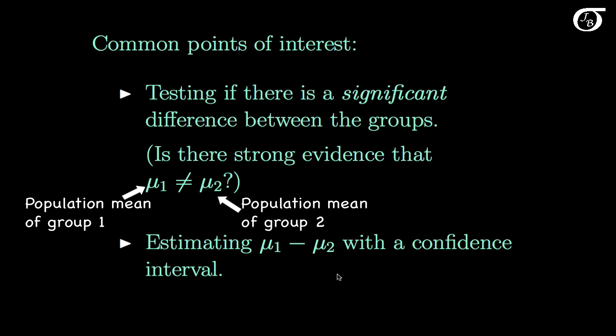We'll use the difference in the sample means, x1 bar minus x2 bar, as an estimator of the difference in the population means. And so to construct any statistical inference procedures, we're going to need to know something about the sampling distribution of this difference in sample means.